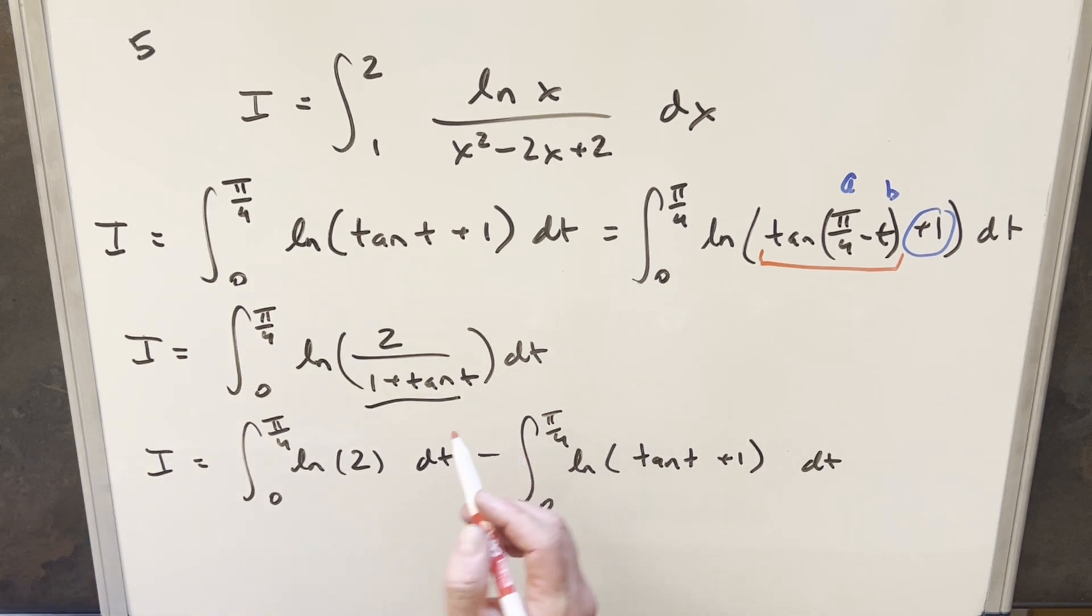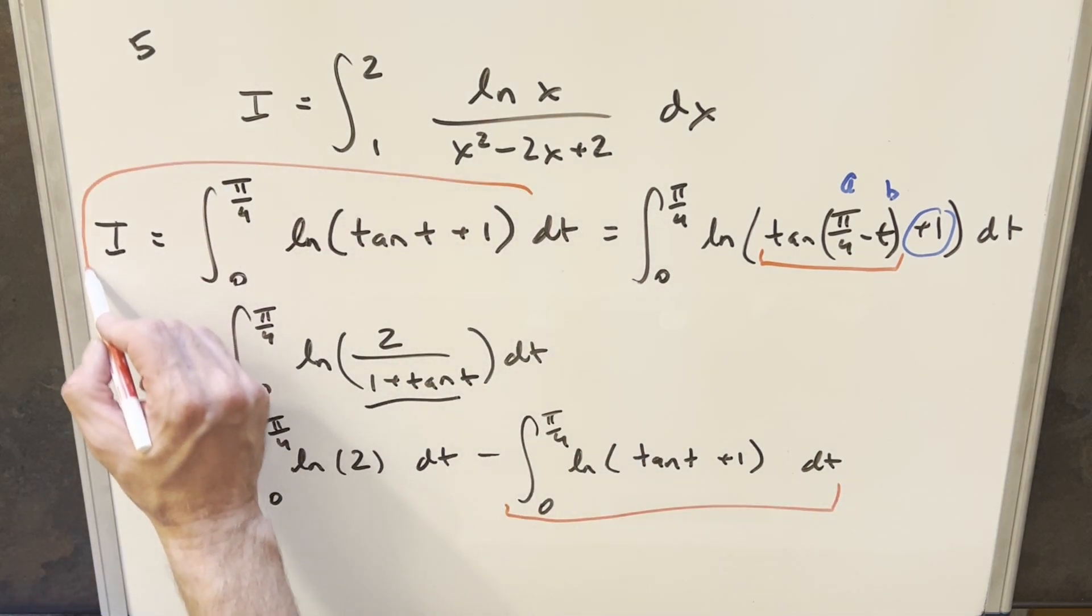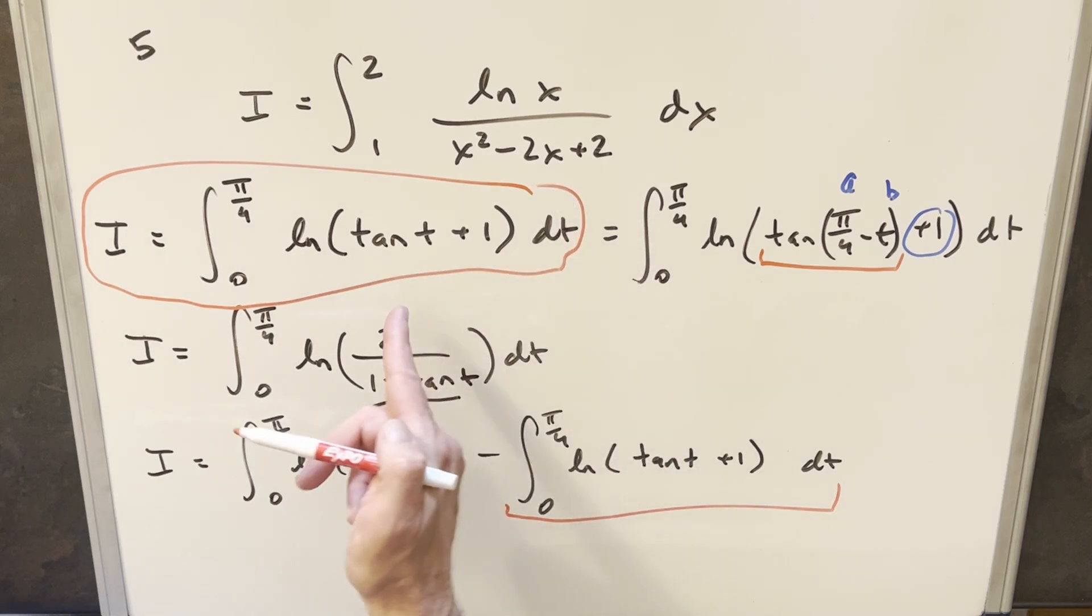But the thing to notice here is what we have right here, this is the same thing as our i value. This version of the i value right here, this is identical. So we can call this one i.